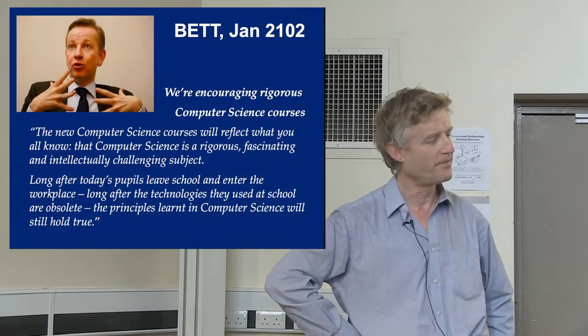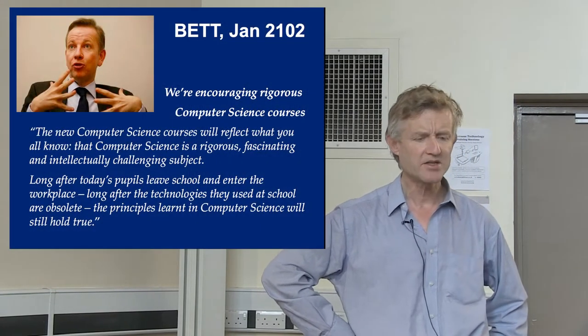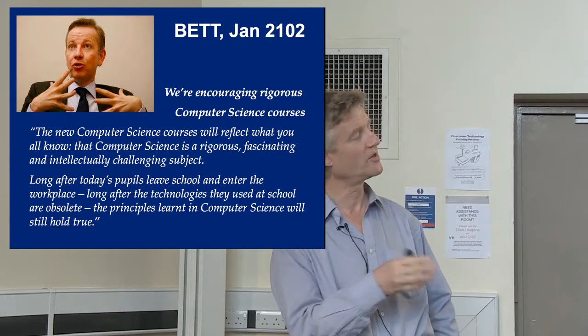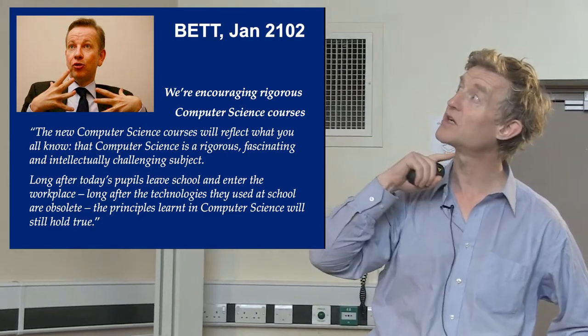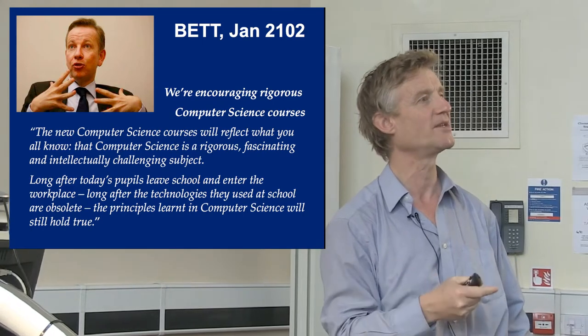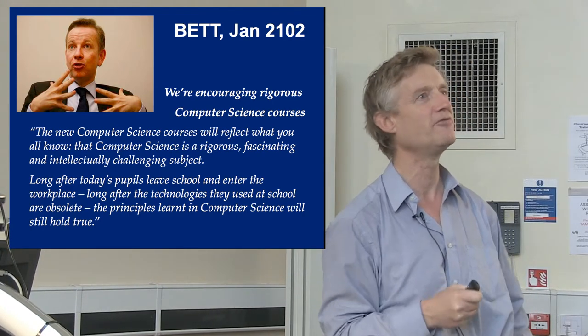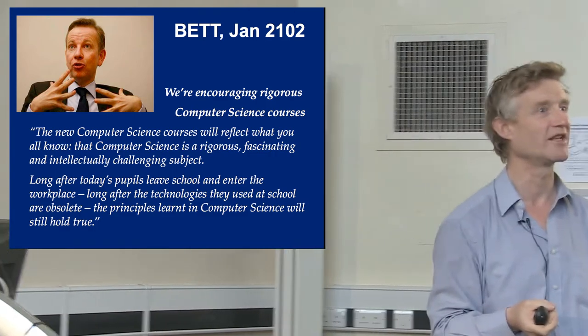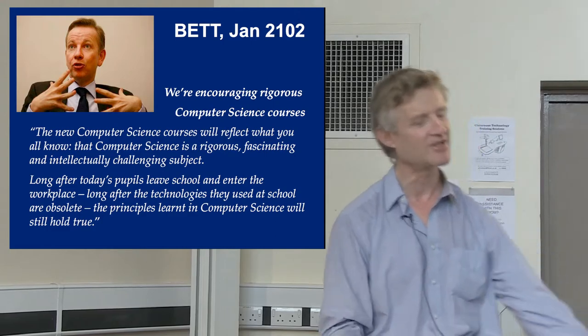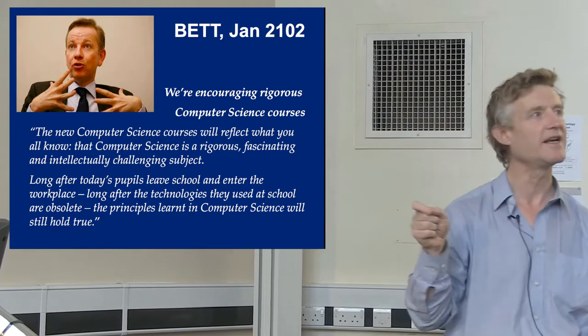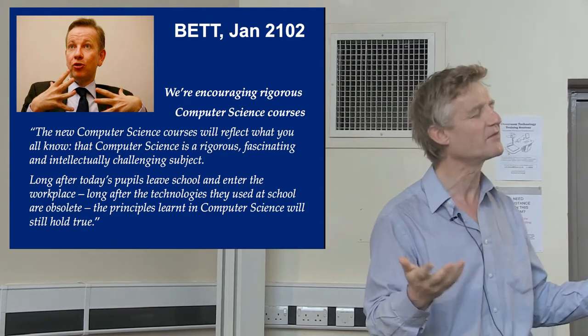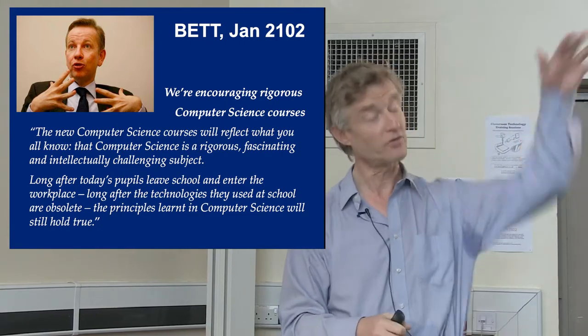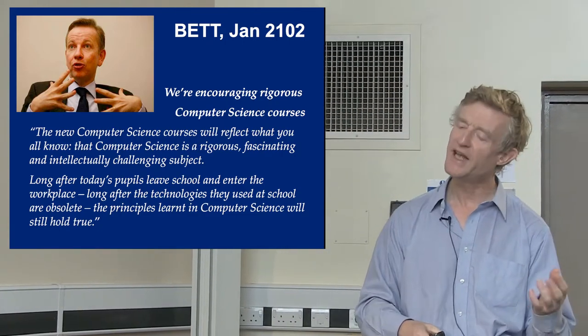Then BETT, this is Michael Gove's policy speech at BETT. And the thing that most people focus on in that speech was the proposed withdrawal of the ICT program of study. But the bit that I always hang on to is this passage about computer science as a school level discipline. And he said words that could have been written by CAS. He understood that computer science is a discipline, as distinct from an applied skill and in a way that maths and physics and geography are disciplines. So that was really good, because it was a sort of top level acknowledgement.